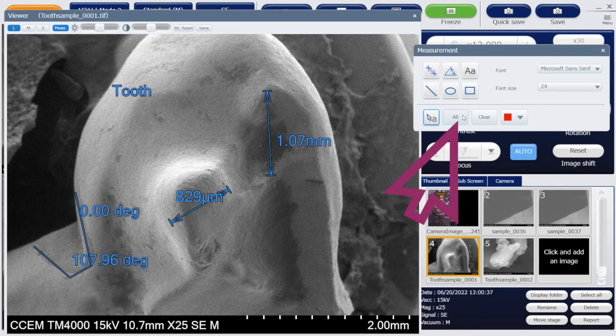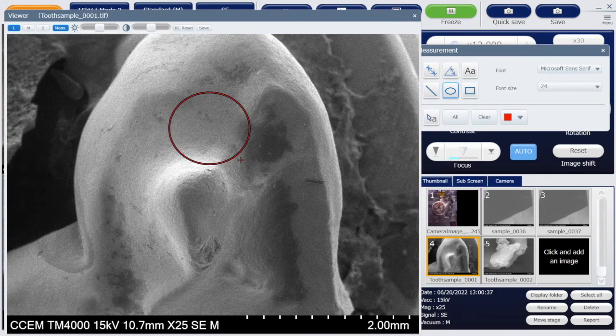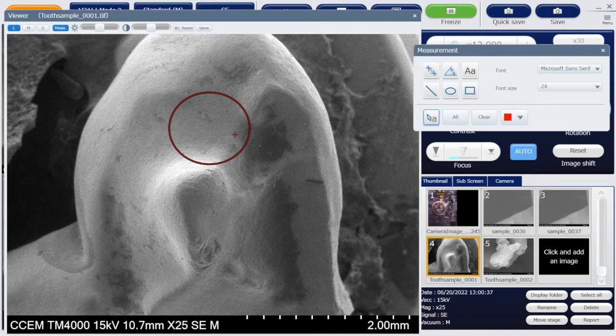To select everything, click on all, and if you want to clear the whole image, select clear. If you just want to remove one object, select that object then click clear.